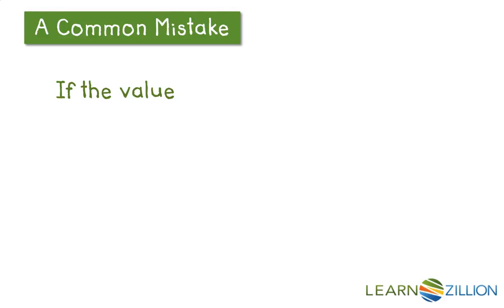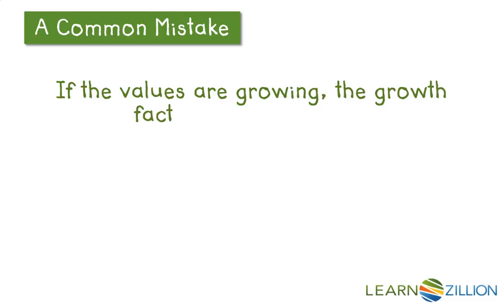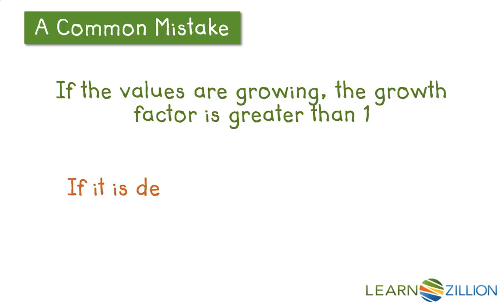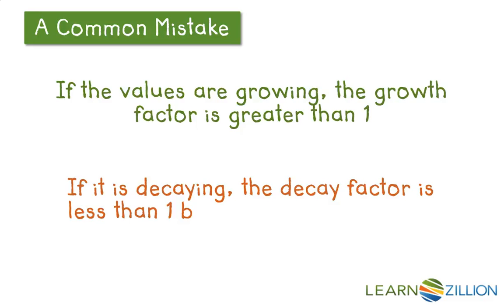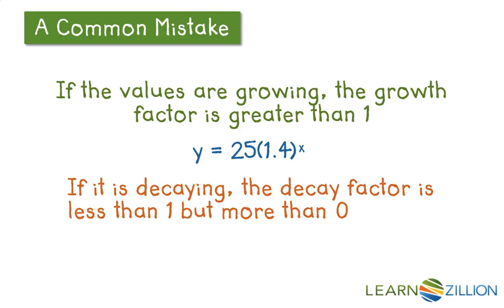I want to make sure I'm extra clear about a common mistake you might make. If you see values growing, the growth factor has to be greater than 1. If a population or bank account is decaying and getting smaller, the decay factor is less than 1 but more than 0. For example, a growth factor of 1.4 means the population is growing, but a factor of 0.4 means the population would be shrinking or decaying.